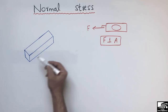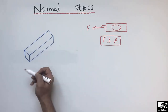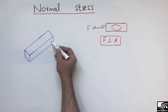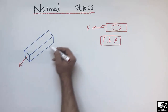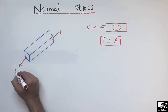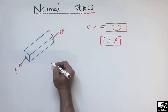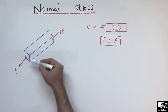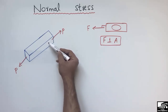Here is an example to explain the concept of normal stress. Consider a beam subjected to a tension force P on both sides. Due to this tension on both sides, the beam will stretch along its length and its length will increase from its original length.